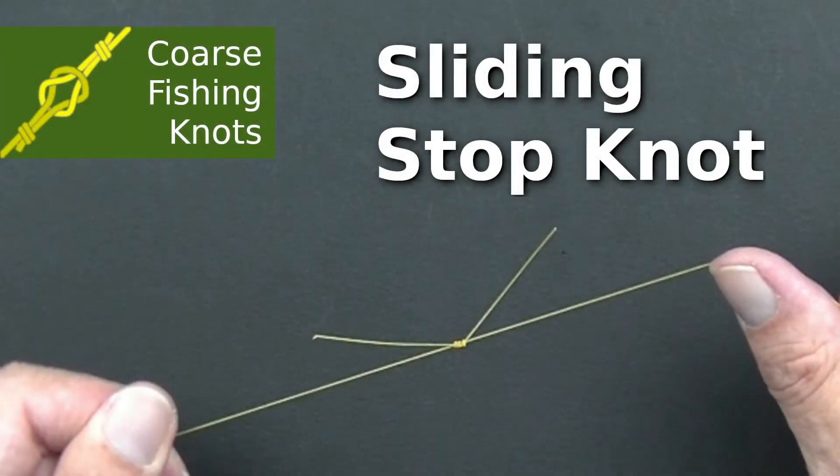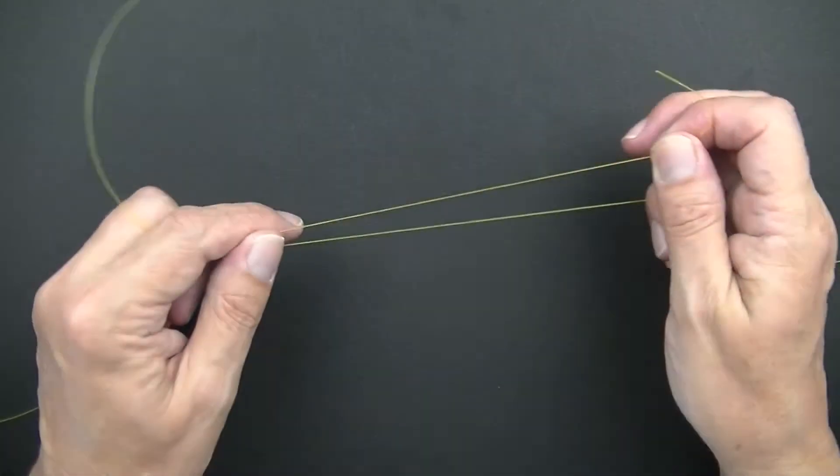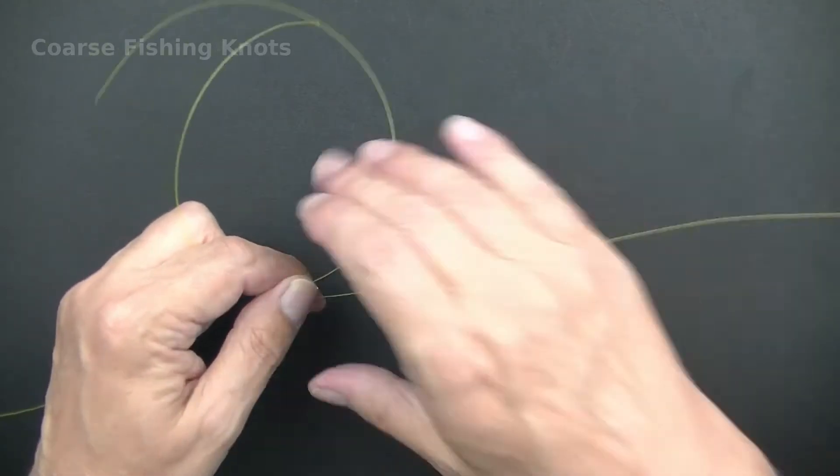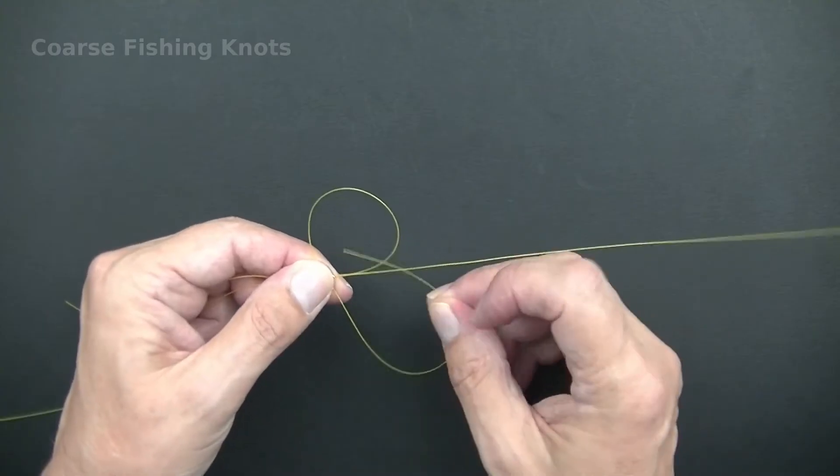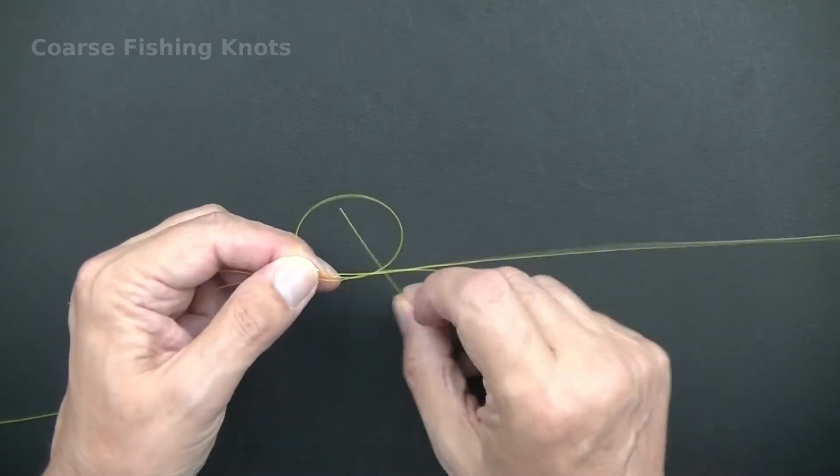Sliding stop knot, how to tie. A sliding stop knot is an easy way to put a fixed but moveable point on a fishing line.